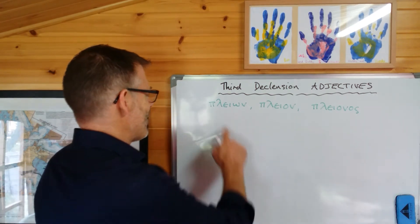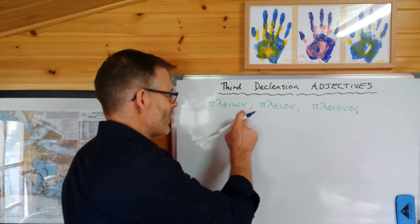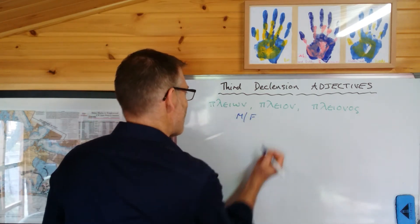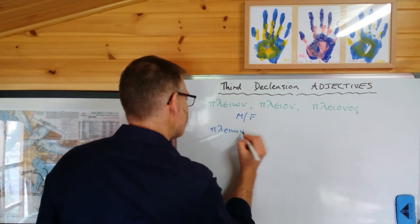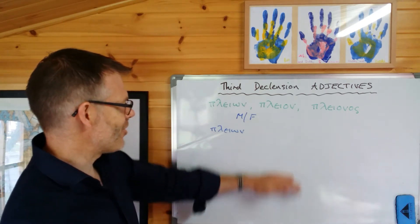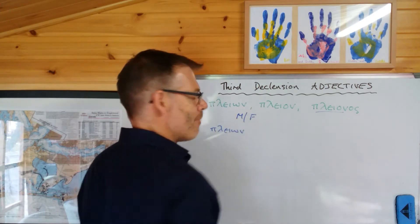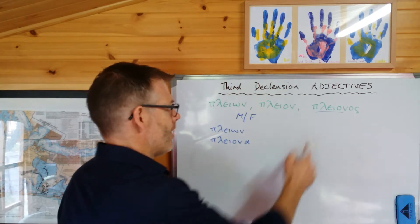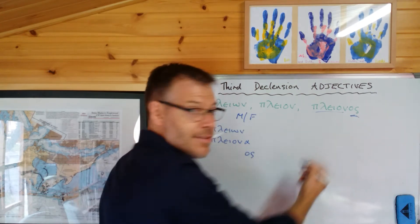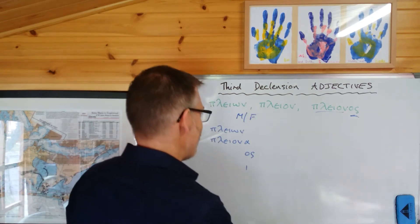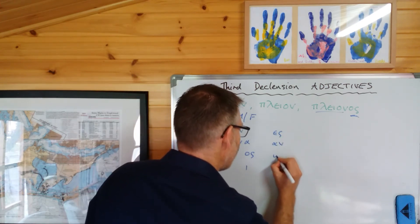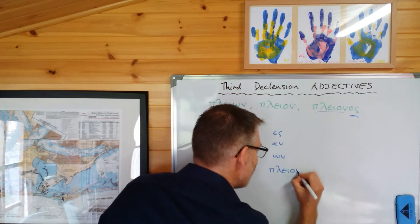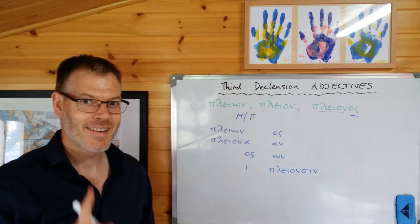Okay, as promised, here it is: play-on, play-on, play-on-os. This is the nominative singular in the masculine and feminine forms of the adjective, so let's do that first. Masculine or feminine: play-on. Then we generate the rest of the declension using the stem we know from the genitive. So: play-on, play-on-a, play-on-os — that's the genitive which we have in the lexical form — play-on-i, play-on-es, play-on-as, play-on-on. Now for the dative plural, you might expect play-on-sin, but I don't think so.